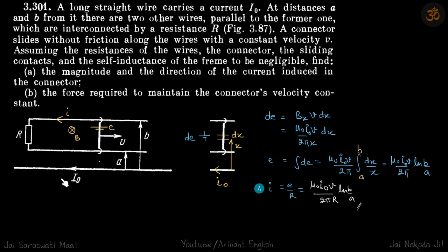Here we have a current carrying wire and a loop where part of it, this rod, is traveling towards the right with velocity V. We have to find the magnitude and direction of the current induced in this conductor and the force required to maintain the conductor's velocity constant.